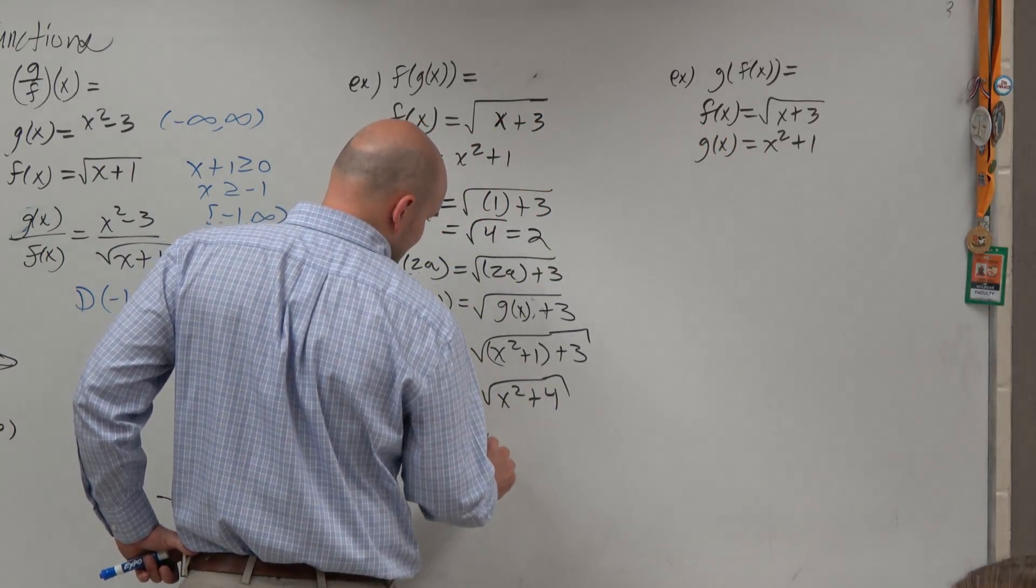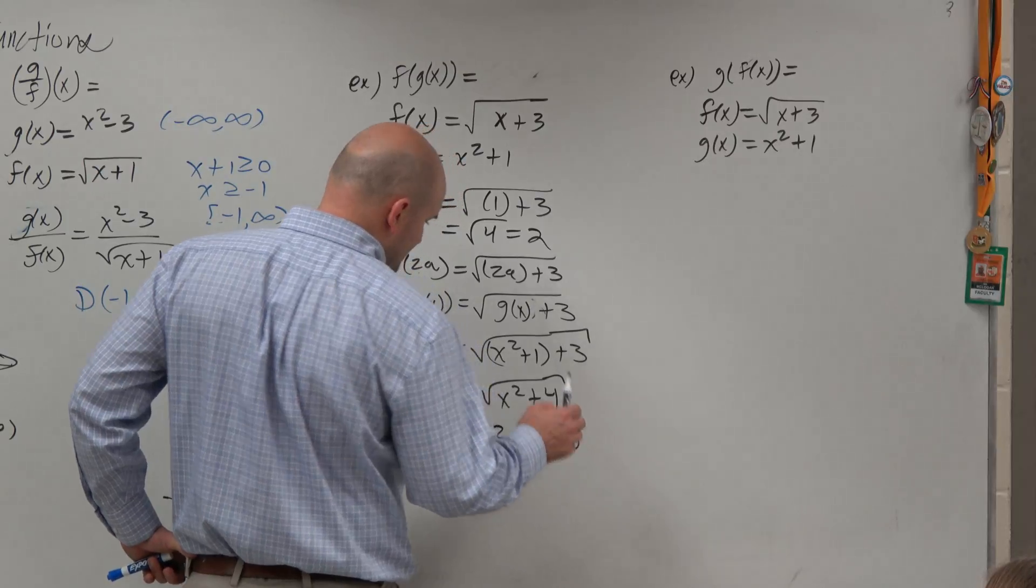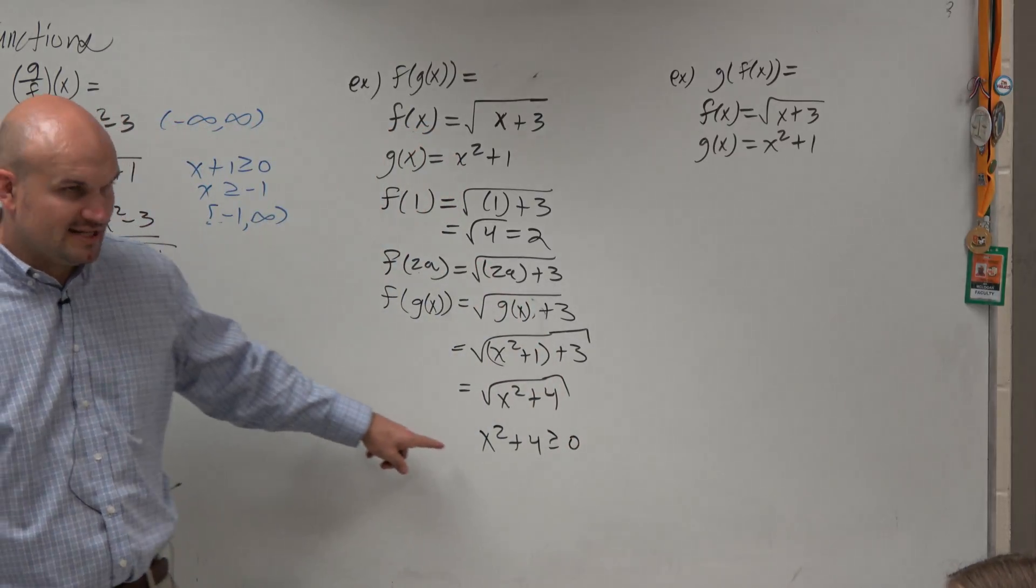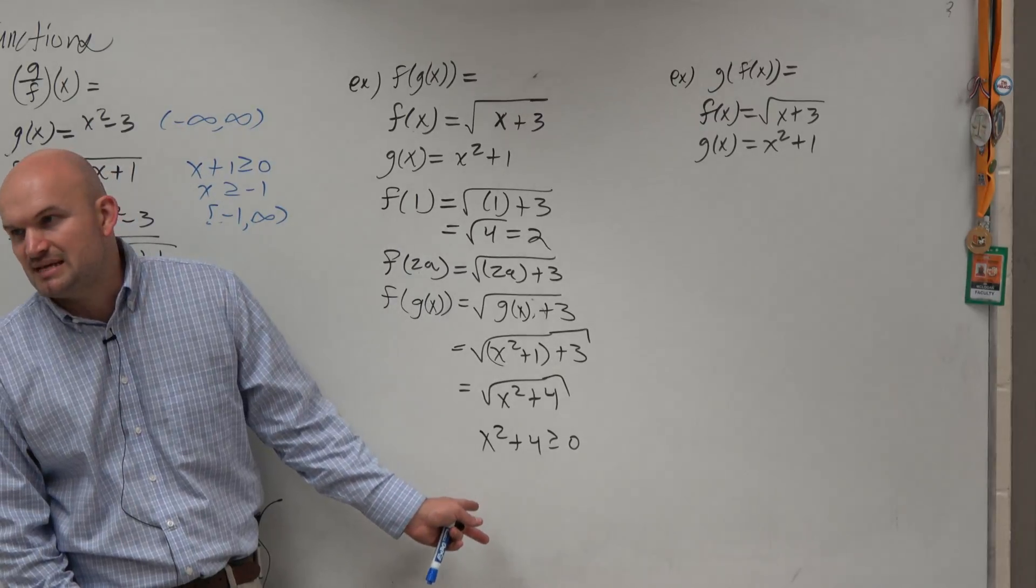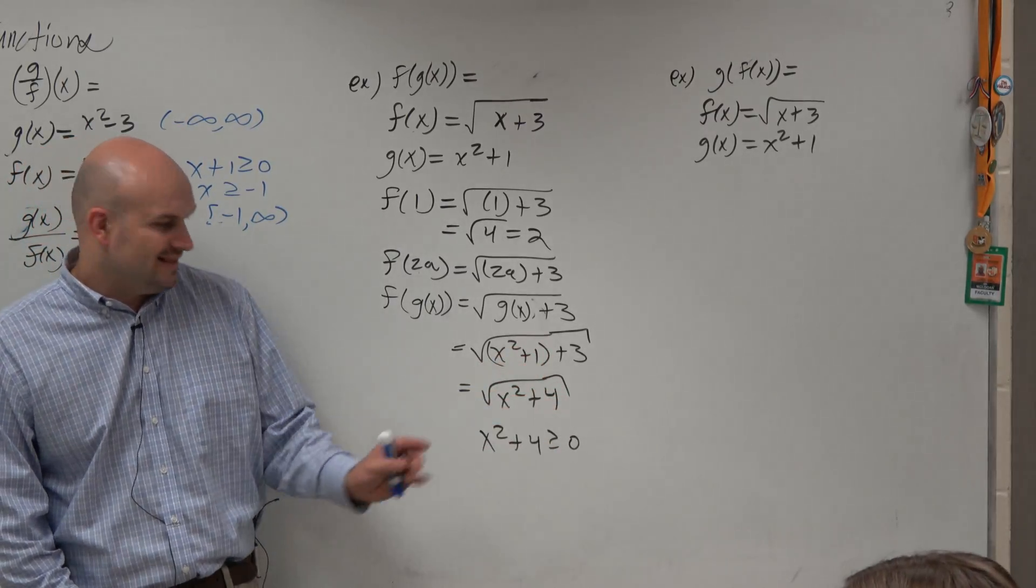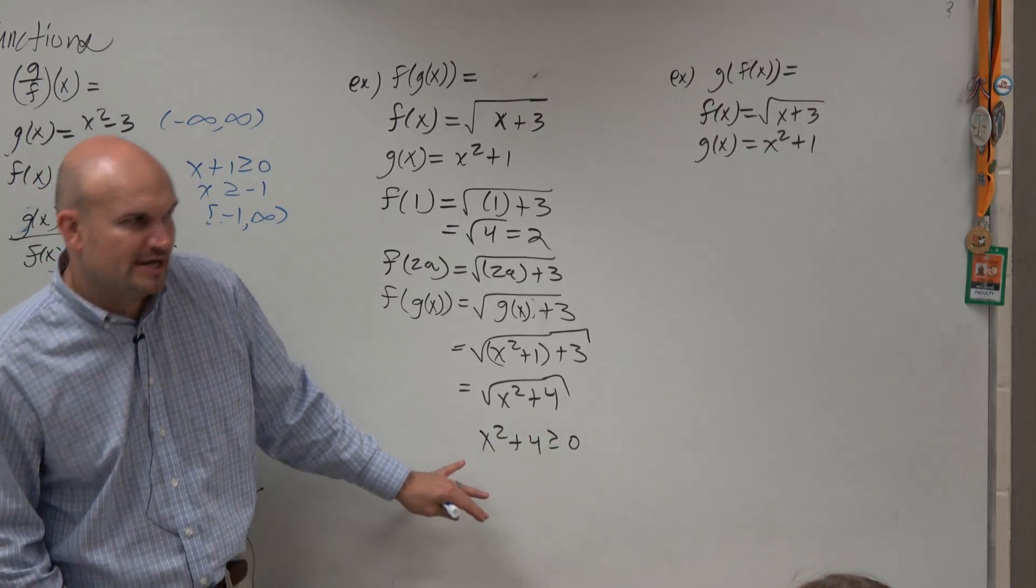Now I'll write down what we do: x squared plus 4 has to be greater than or equal to 0. But the algebra gets trickier because people sometimes can't make sense of how this connects. I think the easiest way to understand this is the graphical approach rather than the algebraic approach.